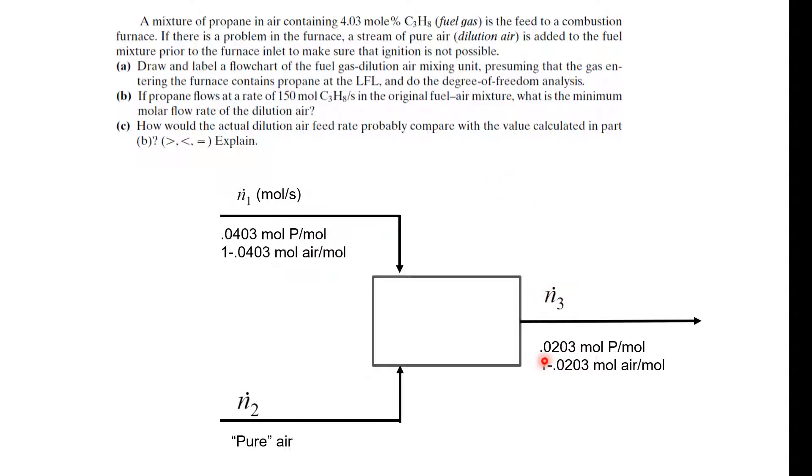Next we have our product stream. This is our molar flow rate of the product which, how did I know to use 0.0203? Because this is the lower flammability, we want it to be above this. As you can see I just subtracted the molar flow rate for the air and we don't necessarily need to calculate it because we know that the summation of the mole fractions has to be one, so I'm just going to subtract that.